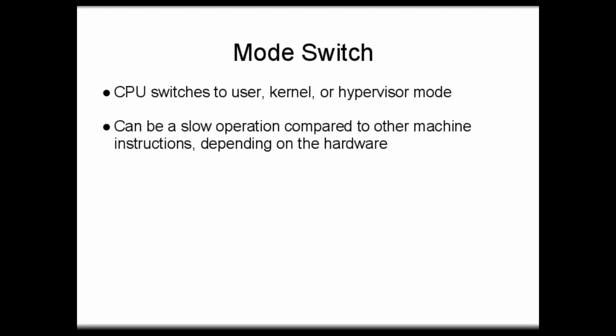Regardless of the number of modes available, whenever we wish to change modes for whatever reason, we have to perform something called a mode switch. That occurs whenever the CPU switches into user mode, kernel mode, or hypervisor mode, or whenever an x86 CPU changes which protection ring is presently effective. Mode switches have the potential to be slow operations compared to other machine instructions. A notable example was the first generation of Intel Core 2 series processors, in which mode switches into and out of hypervisor mode were quite slow.